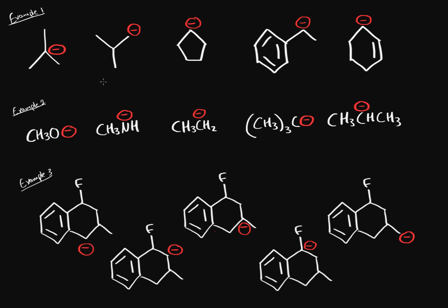We're going to look at this first example and start off by labeling each carbon that has the carbanion as primary, secondary, or tertiary, and checking whether it's benzylic or allylic — aka resonance stabilized. This one is a tertiary carbon, this one is a primary carbon, this one's a secondary, this one's a secondary benzylic, and this one is a secondary allylic because it has a double bond right next to it.